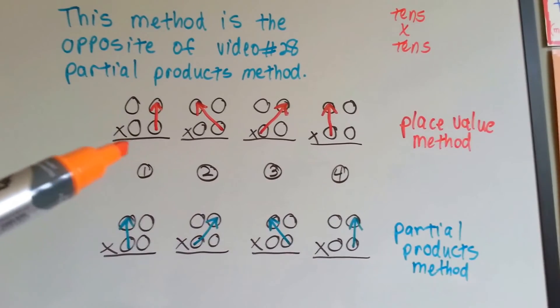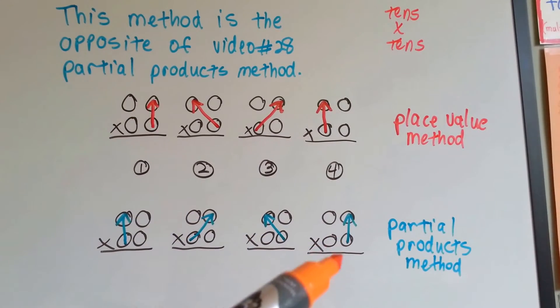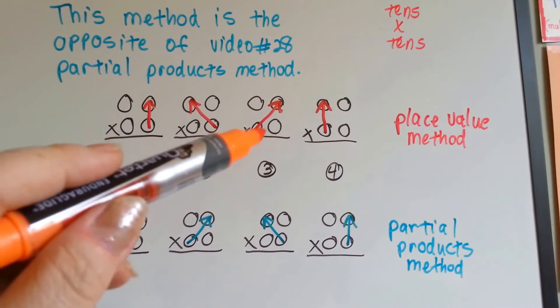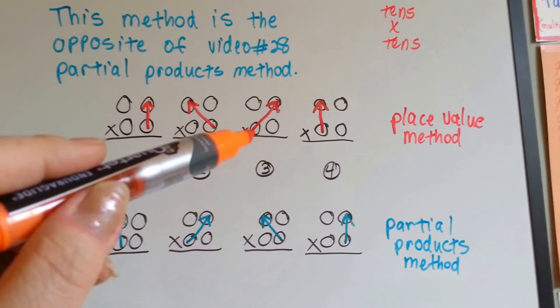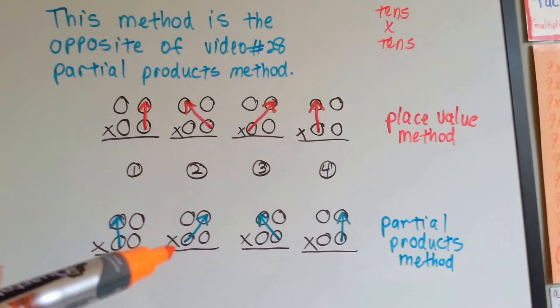See how whatever is number 1 for this one is number 4 for this one. The third thing we did in the place value was multiply these 10s by these 1s, and they did that second.